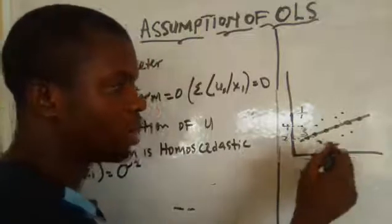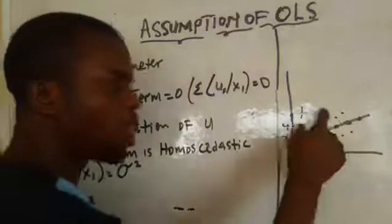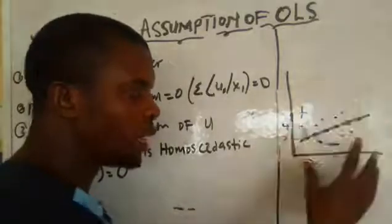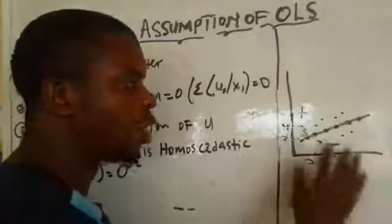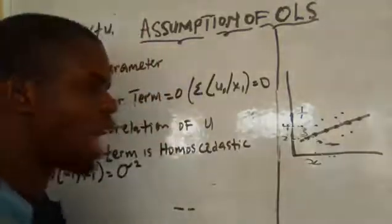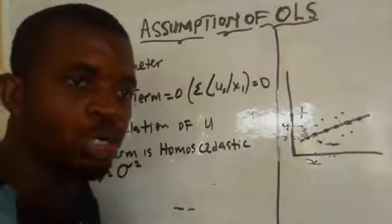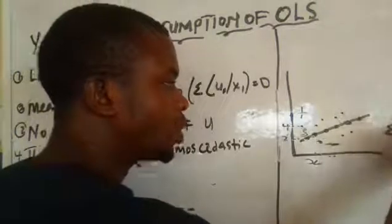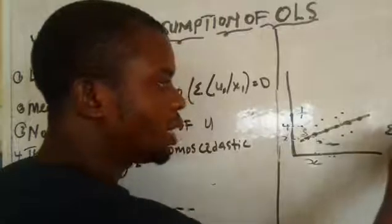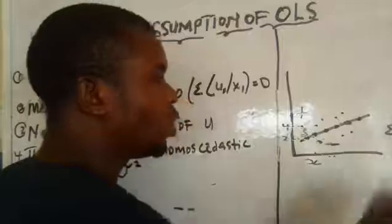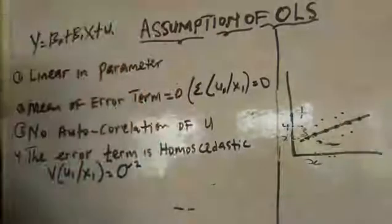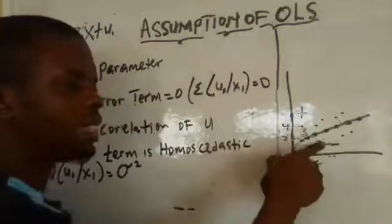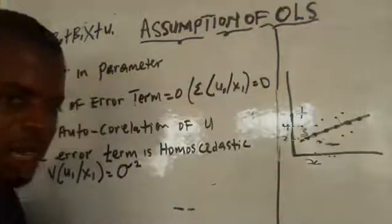If you look at all these points together, some are above the line and some are below. The ones above the line give us positive values because they are greater than the fitted line, and the ones below the line give us negative values. When you sum up all the above errors and the below errors together, it's going to give you zero. That's why we say when we take the population of the errors and sum them together, it gives you zero. And when you find the mean of zero, it's definitely going to give you zero — because mean is summation x over n. That is the assumption: mean of error term equals zero, because the positives cancel out the negatives.